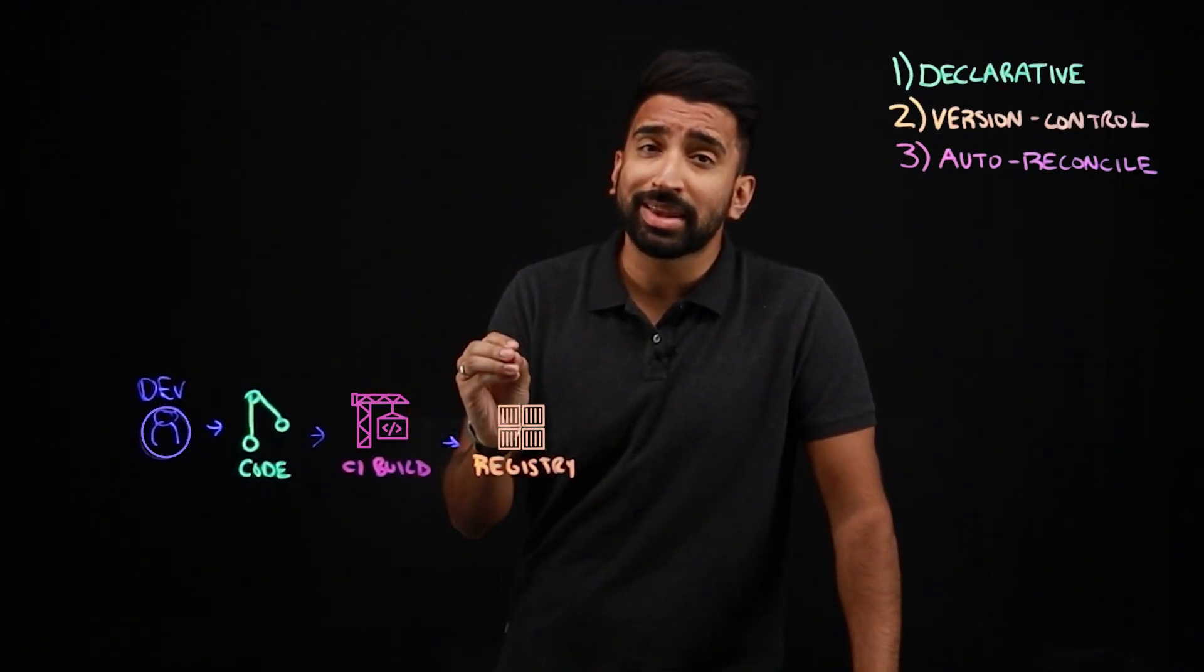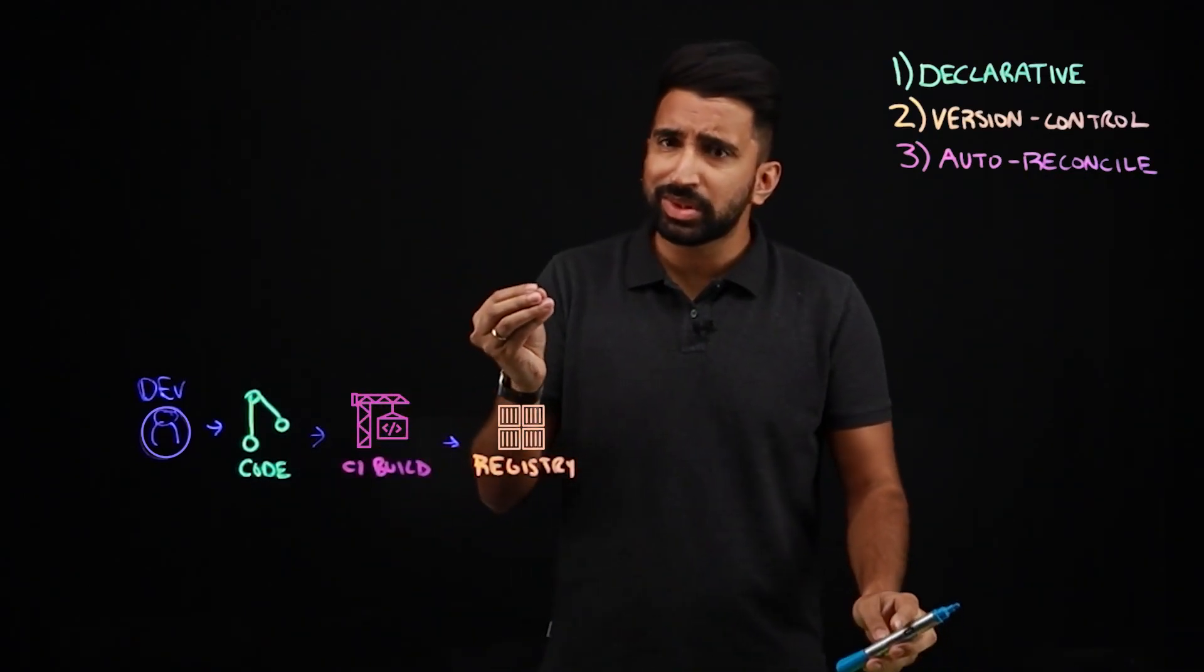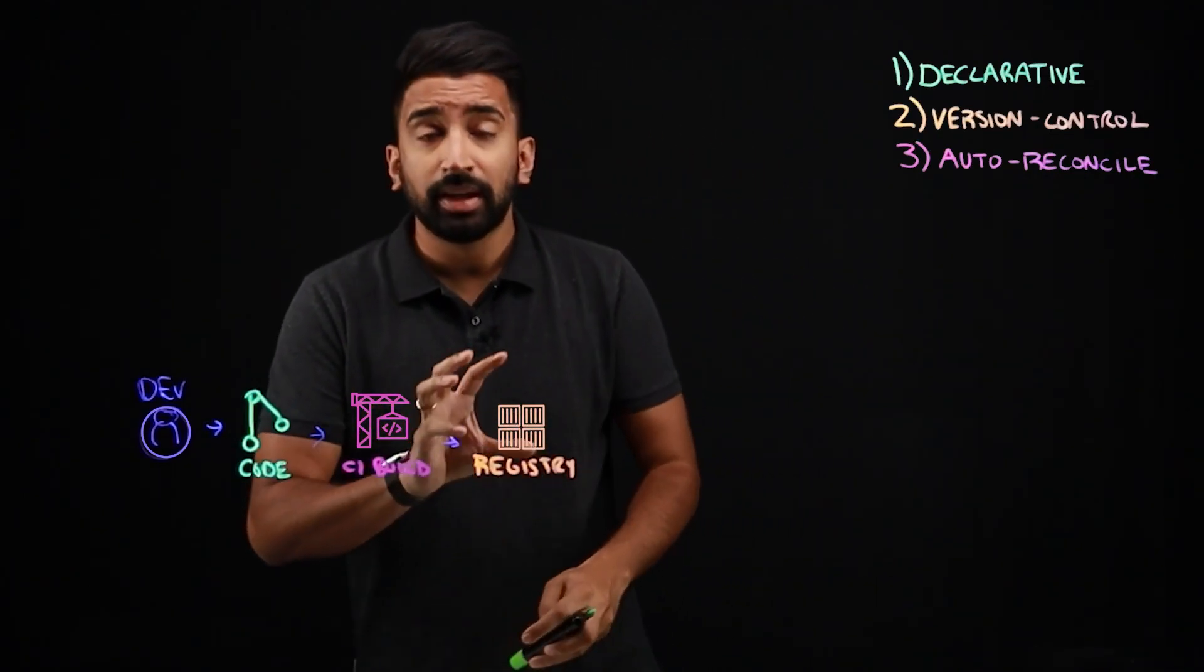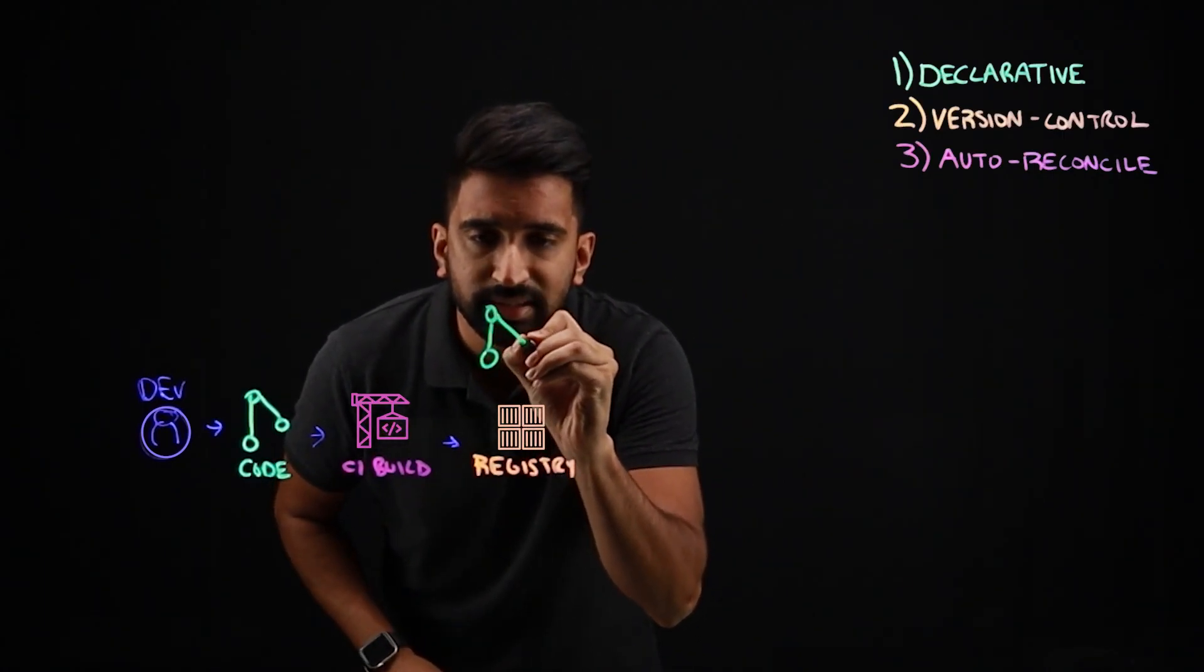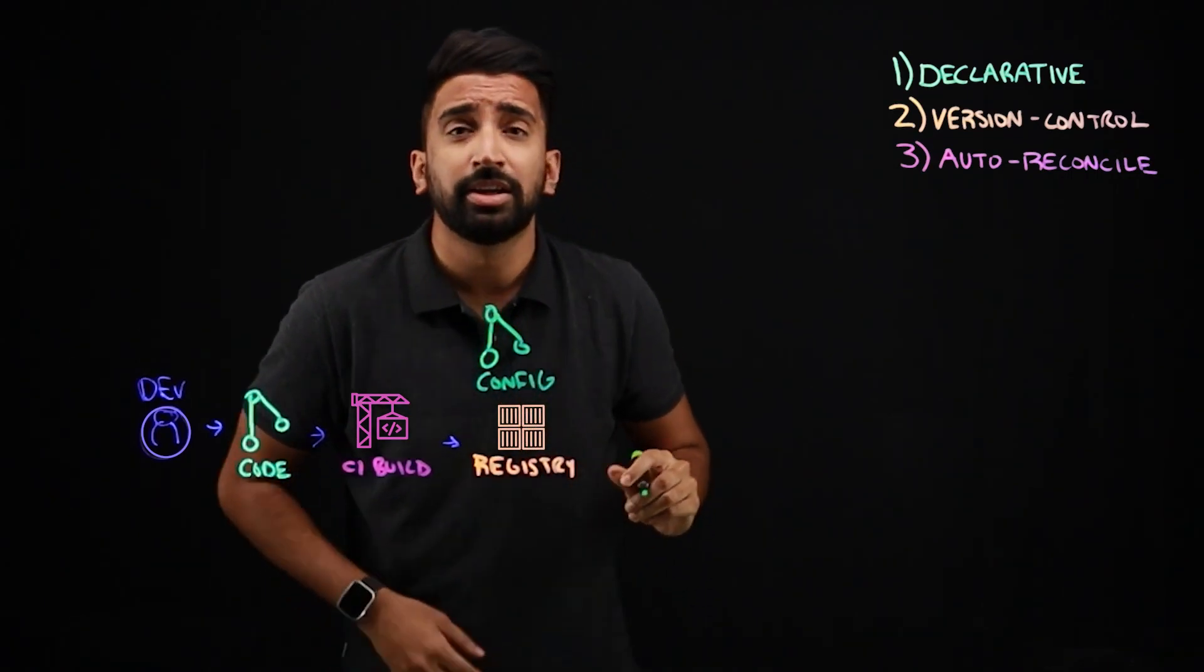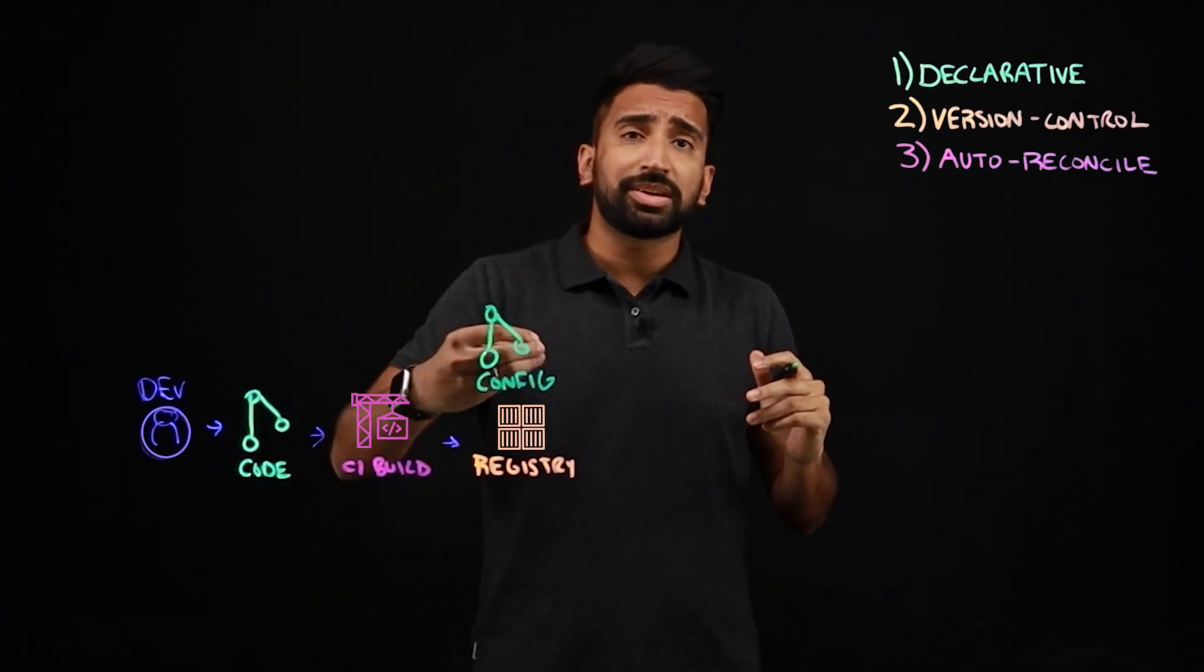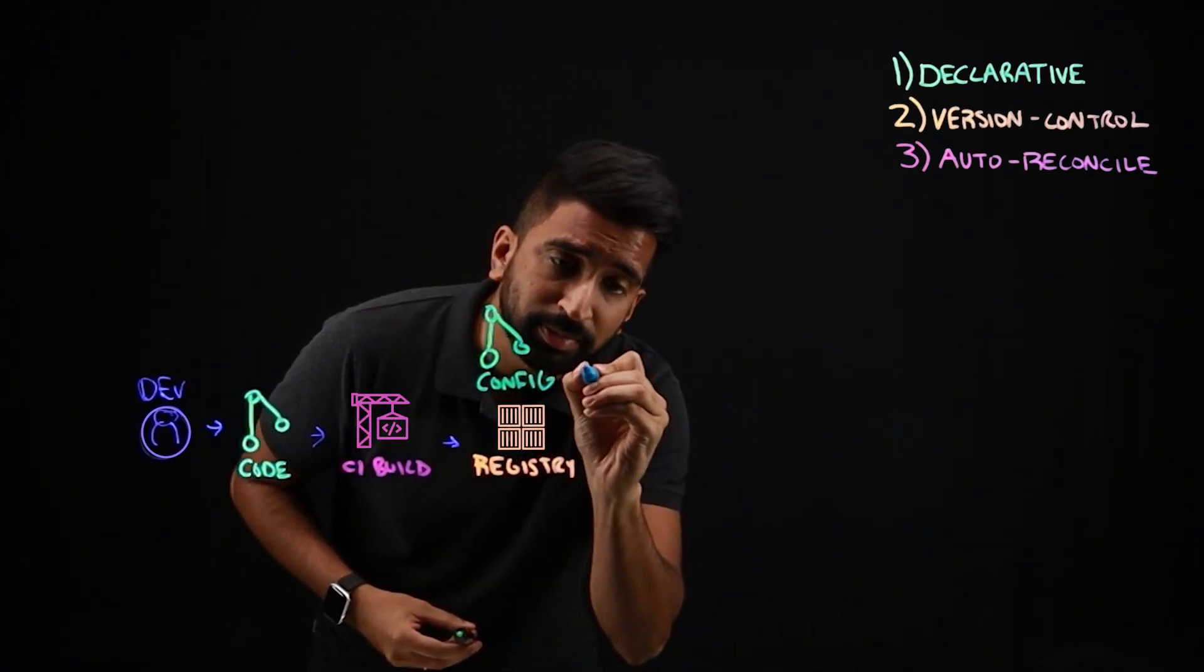Now if we wanted to implement this in a way that wasn't true to GitOps, maybe a standard DevOps workflow, let's see what that would look like. Now the container image is going to be combined with some config. Let's say that's in a different Git repo, so in a config Git repo for things like Kubernetes deployments and services and that kind of thing. That's going to be combined with the container image from the registry.